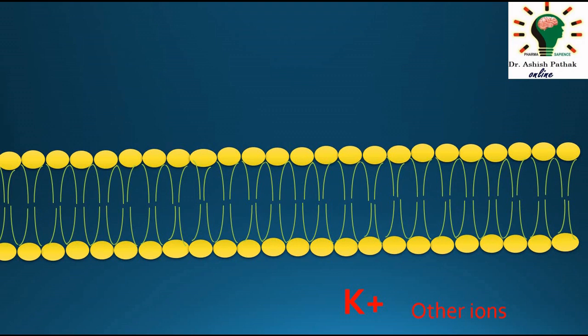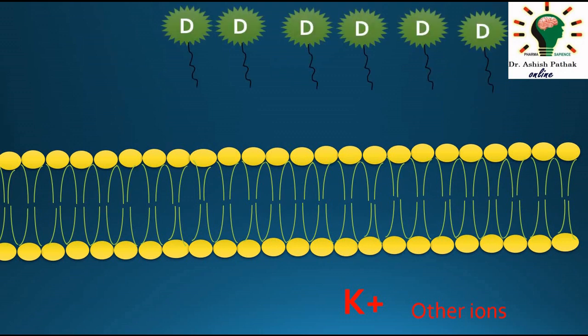So, we can see it in a simple animation here. This is bacterial cell membrane with potassium and other ions inside the cell. Here these are Daptomycin molecules with lipoidal tails.